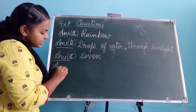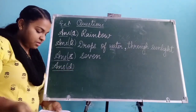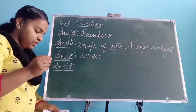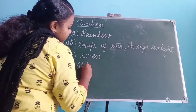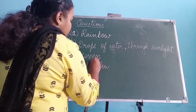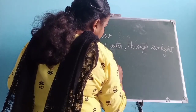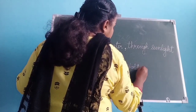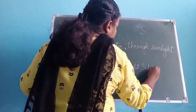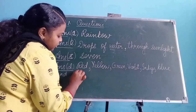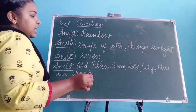Now answer D: name the colors of the rainbow. So the names of the colors are red, yellow, green, violet, indigo, blue, and orange.